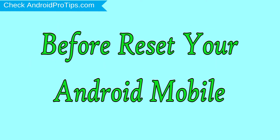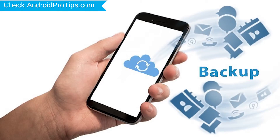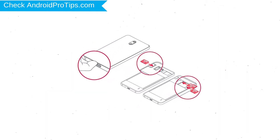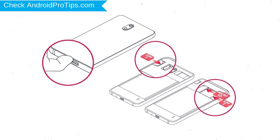Before resetting your mobile, charge your mobile if the battery is less than 50%. You need to make sure that the data on your device is backed up so you do not lose valuable photos or documents. Reset deletes all your mobile data, so you better back up all important data and remove your SIM and SD card.